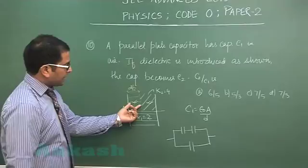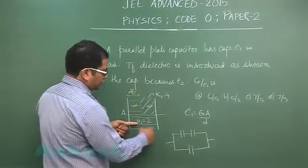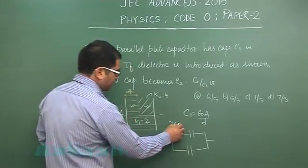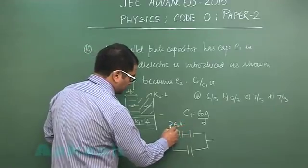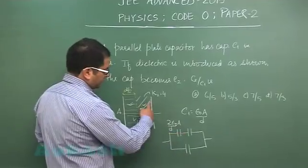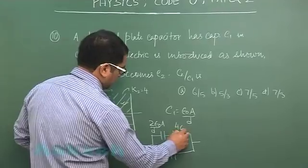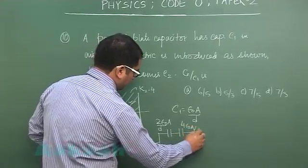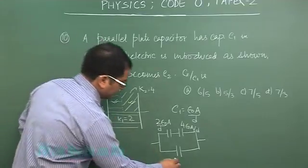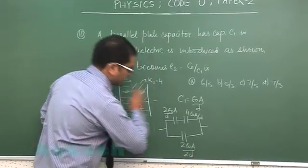For this particular capacitance let us try to see that would be the k is 2. So 2 epsilon naught area is A by 2 separation is D by 2. So that would be A by D itself. For this again area is A by 2 separation is D by 2. So k epsilon naught A by D and for this area is A by 2 separation is D. So 2 epsilon naught A by 2 multiplied by D.